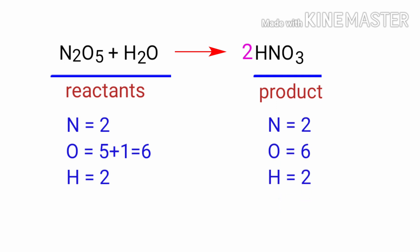The equation is now balanced. There are 2 nitrogen atoms, 6 oxygen atoms, and 2 hydrogen atoms on both sides.